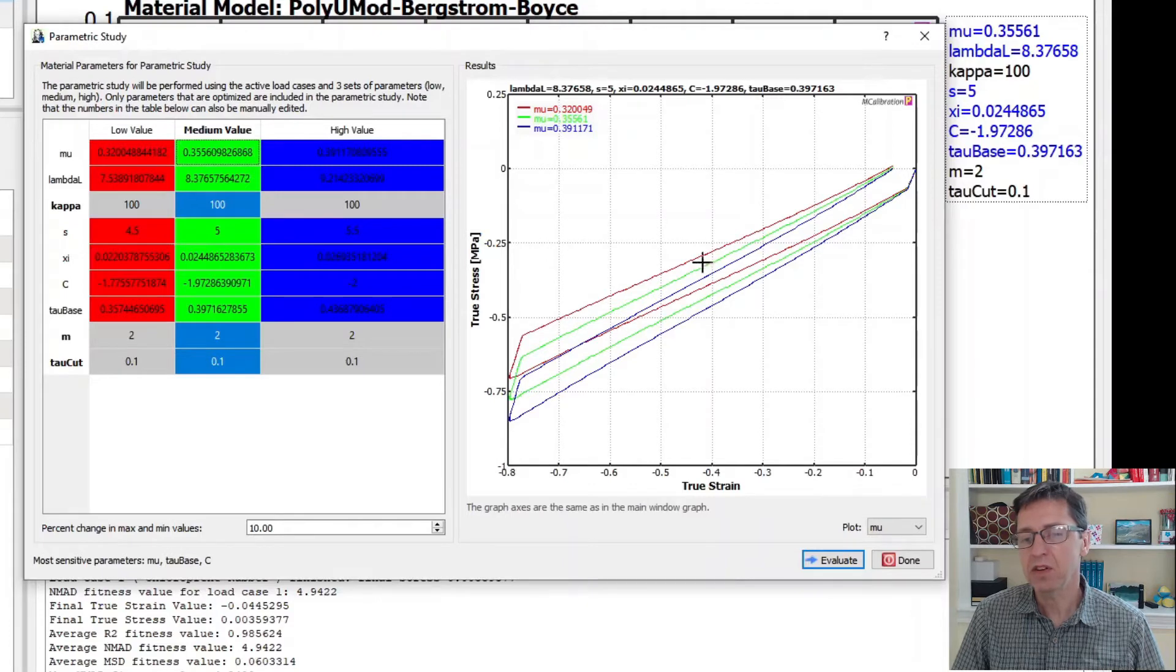So after it's done you'll see that in the theater right it's now plotting mu, the influence of the parameter mu on this response. So mu was initially 0.35 and here in the dialog box that's the medium value.